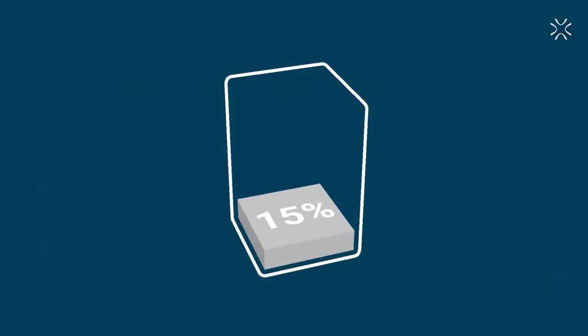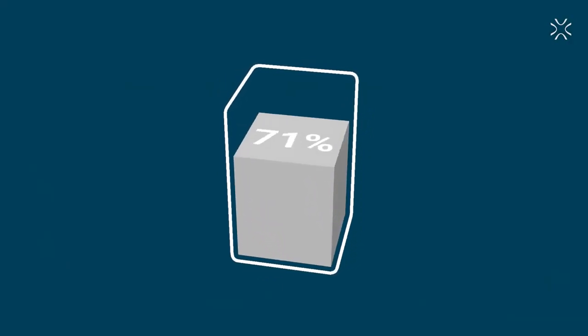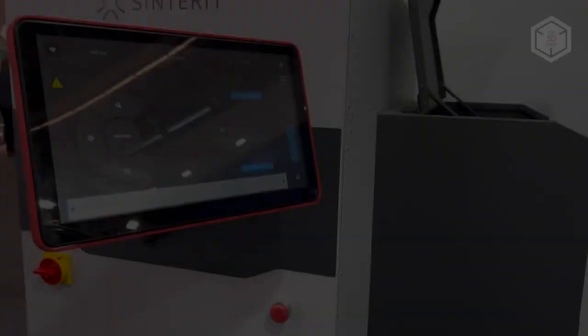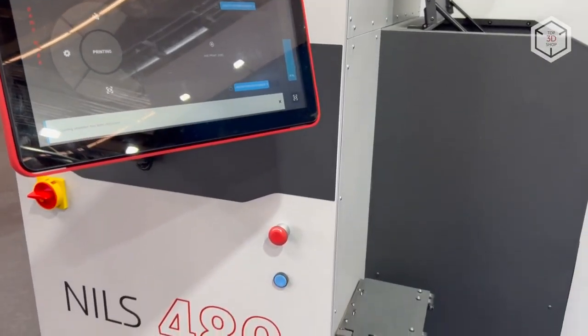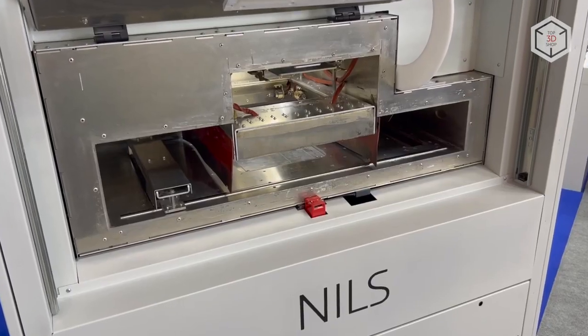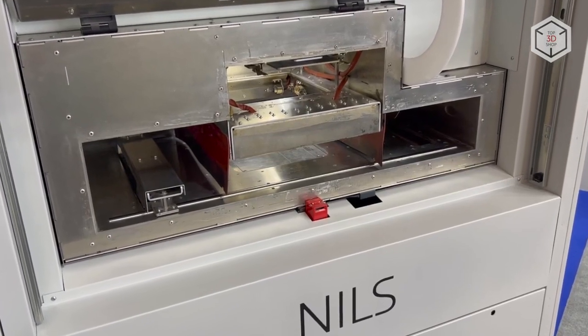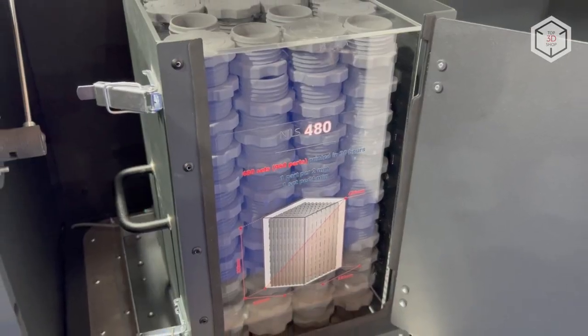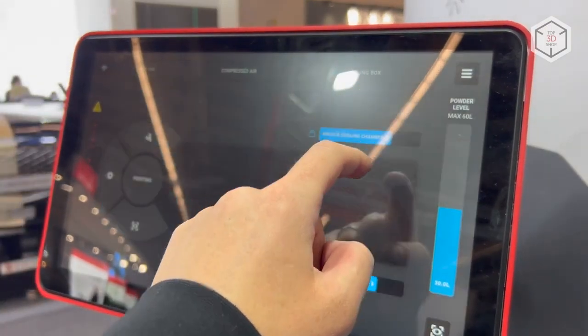This automated process also ensures that the Niels can process three print jobs simultaneously. As soon as a print job has been fed into the cooling chamber, the Niels automatically starts the next print job. This further increases the efficiency of the printer and allows it to complete multiple print jobs overnight.